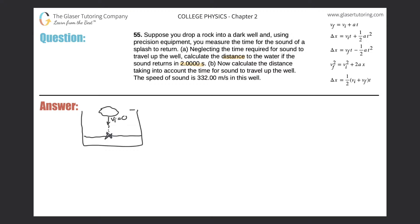Basically, the time from when the sound was created to when we perceive it is exactly the same — 2.0000 seconds. The rock is in free fall, so the acceleration is due to gravity: negative 9.80 meters per second squared. Let's write the knowns: initial velocity is zero, and the time is 2.0000 seconds.